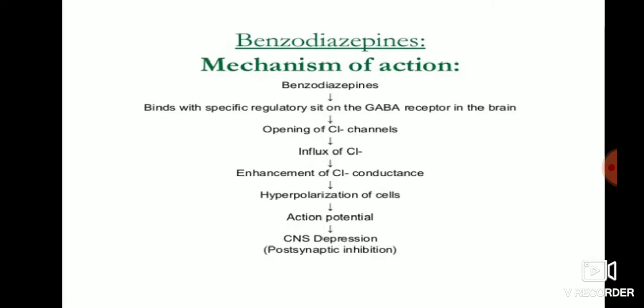Coming to the mechanism of action of benzodiazepines: this type of drug binds with the GABA receptor present in the brain. Once bound, it opens the chloride ion channels, increasing chloride ions and producing conductance. This state is called hyperpolarization of the cells. Once hyperpolarization occurs, the inhibitory potency is increased, and finally CNS depression occurs.